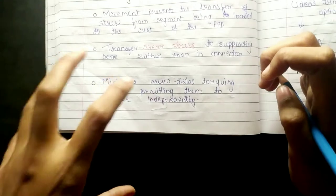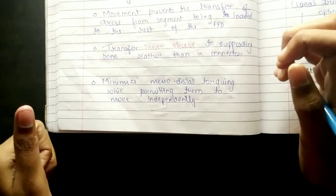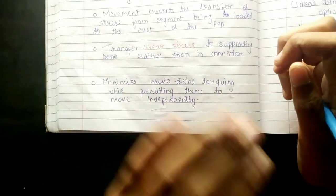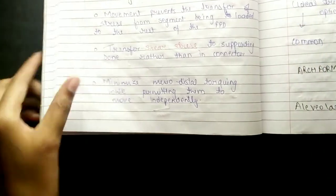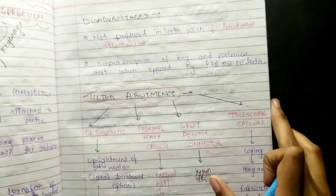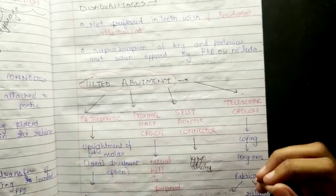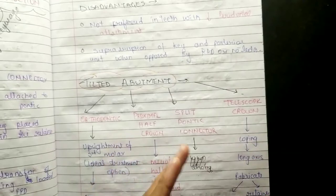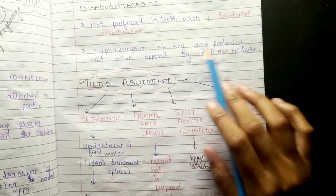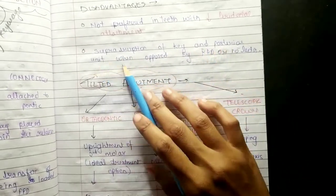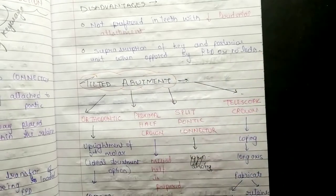It also minimizes mesiodistal torquing while permitting the segments to move independently. These are the advantages. Coming to the disadvantage: periodontal attachment is reduced, leading to supraeruption of the key and posterior unit when opposed to an RPD.